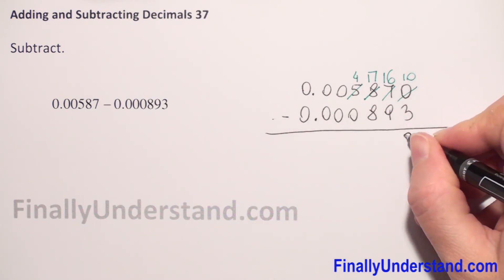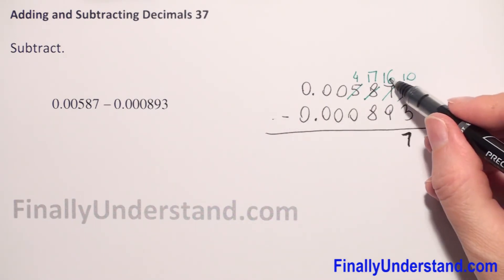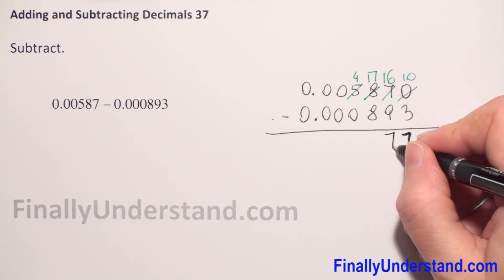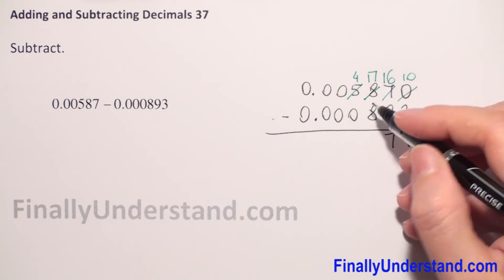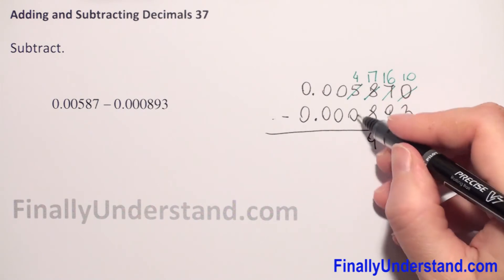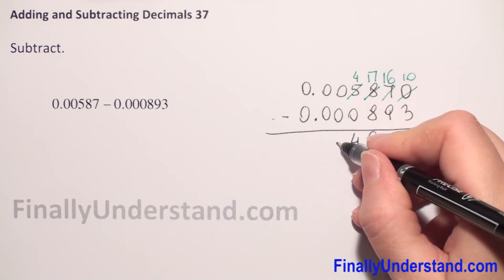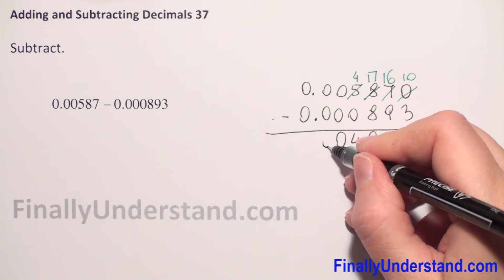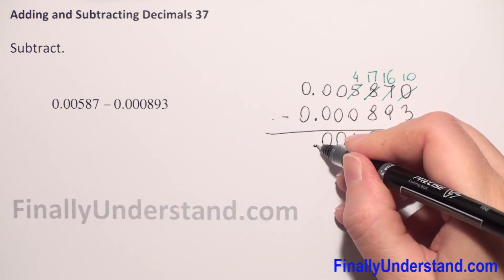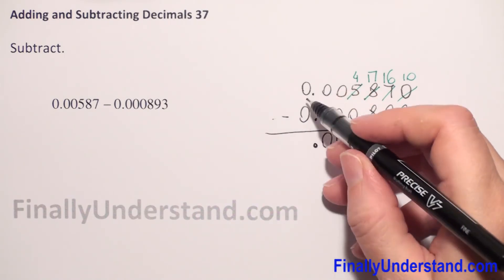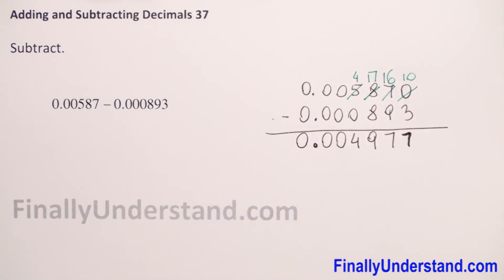10 minus 3 is 7. 16 minus 9 is 7. 17 minus 8 is 9. 4 minus 0 is 4. 0 minus 0 is 0. 0 minus 0 is 0. The decimal point we have to copy in the same column. 0 minus 0 is 0.